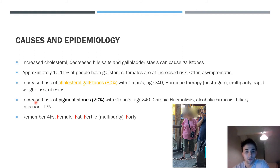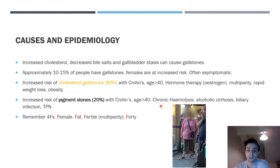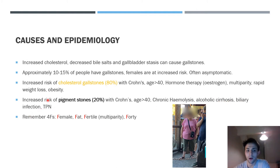The other main form are pigment stones. Risk factors include Crohn's disease affecting bile salt reabsorption, age above 40, and most importantly chronic hemolysis — such as sickle cell disease or spherocytosis — which increases bilirubin levels and plays a major role in pigment stone formation. Alcoholic cirrhosis, biliary tree infection, and total parenteral nutrition also increase risk.